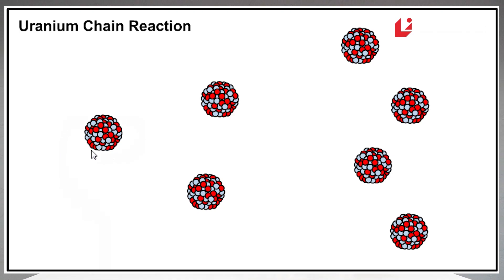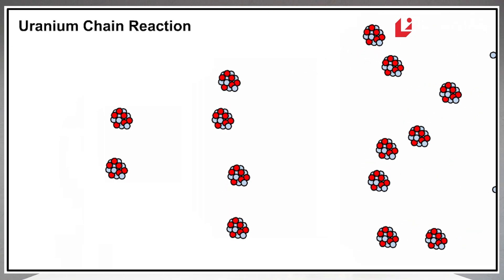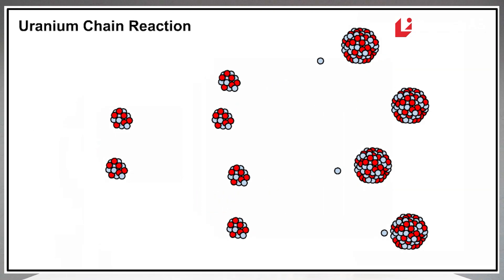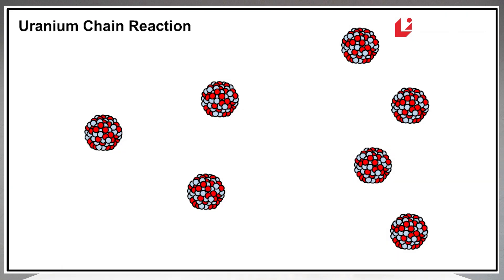It is nuclear fission that takes place in an atomic bomb. In an atomic bomb, a larger atom splits into smaller atoms and energy gets released. The neutrons produced then keep hitting other atoms, which also split into smaller atoms, such that a chain reaction develops. Because of this chain reaction, a huge amount of energy is released.